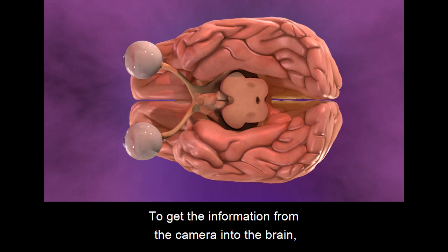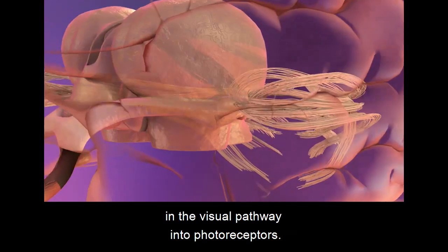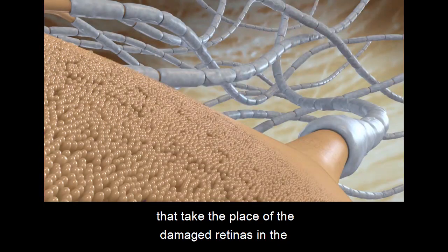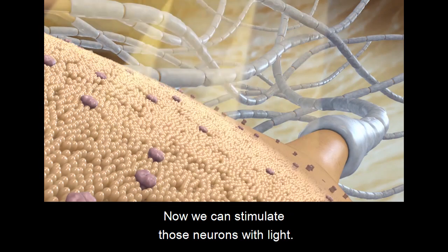To get the information from the camera into the brain, we will first use gene therapy to turn specific neurons in the visual pathway into photoreceptors that take the place of the damaged retinas in the eyes of a blind person. Now, we can stimulate those neurons with light.